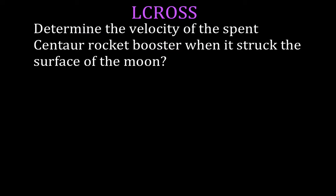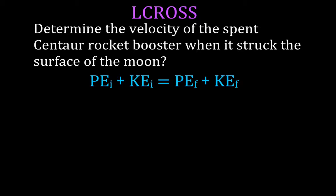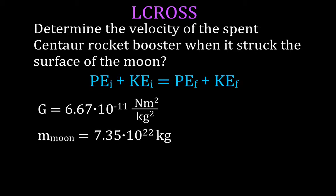We want to determine the velocity of the spent Centaur booster rocket when it struck the surface of the moon, using conservation of total mechanical energy. That tells us the initial potential energy plus the initial kinetic energy equals the final potential plus the final kinetic energy. We're given the gravitational constant G = 6.67 × 10⁻¹¹ N·m²/kg², and the mass of the moon is 7.35 × 10²² kg.